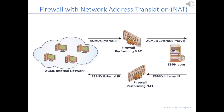This graphic explains how NAT — network address translation — works. On the left-hand side is the ACME internal network. When someone in the company wants to get a baseball or football score, their internal ACME IP address doesn't go outside the firewall. The firewall performs its NAT function and assigns a public address that goes out to, in this case, ESPN on the right. Similarly, ESPN's internal IP address is hidden from you — it goes through its firewall, the NAT function is performed, and an external IP address is what the ACME company sees back.